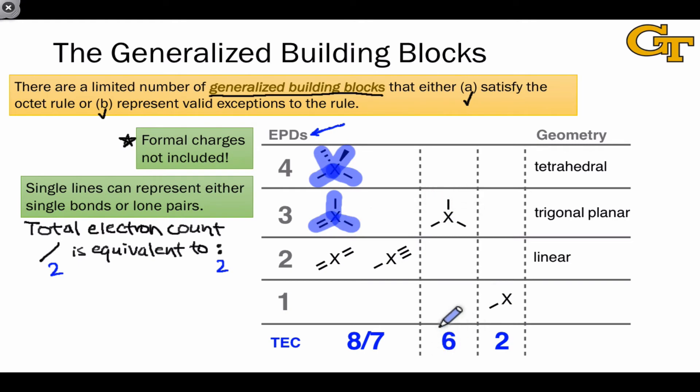Or we can have a six-electron situation where there are three bonds or lone pairs to the central atom for a total electron count of six with three electron pair domains.